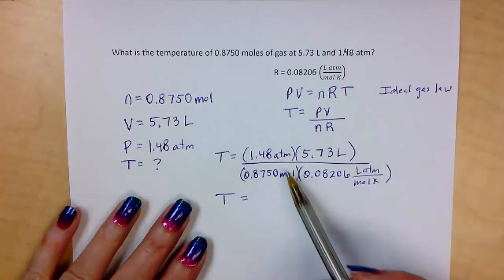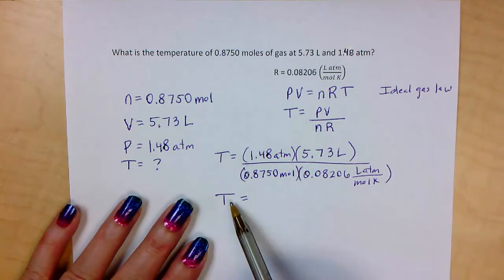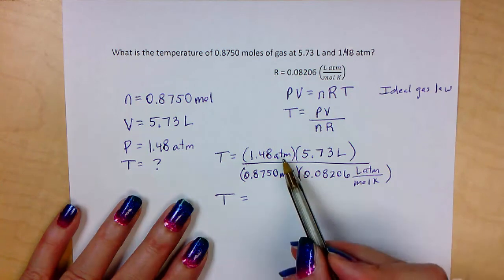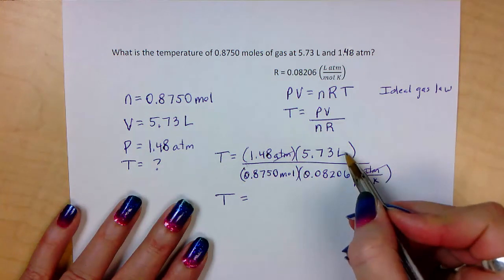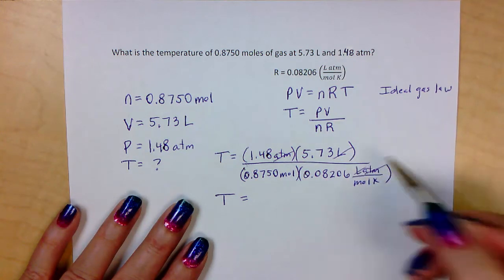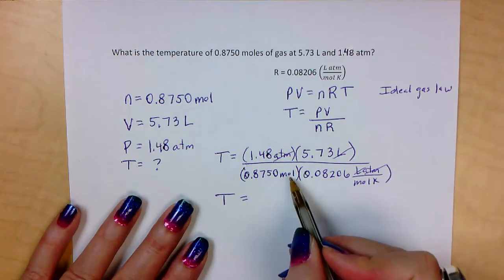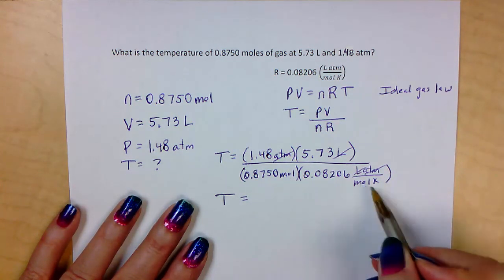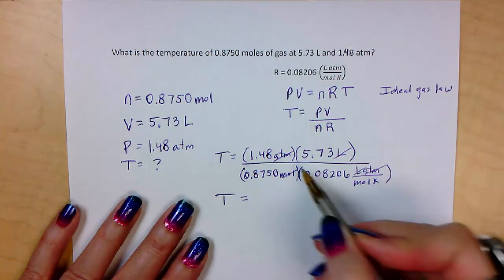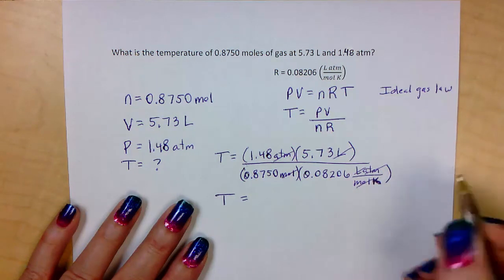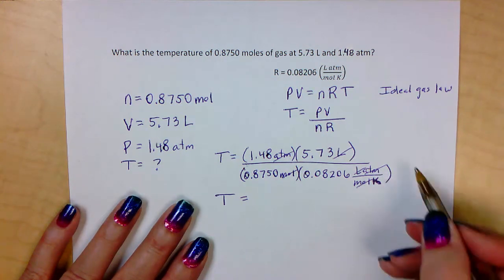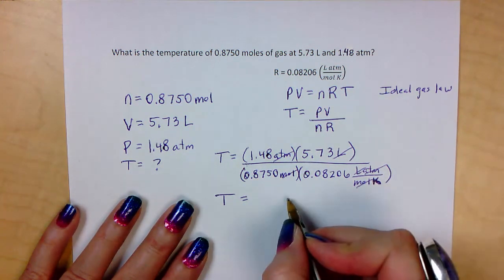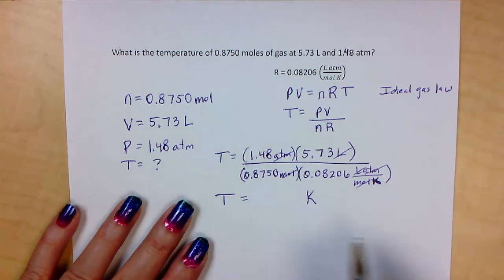So let's look at our units. If our unit that we end up with is a temperature unit, then we'll know that we did it right. So we have atmospheres on top and atmospheres on the bottom. That's going to cancel out. We have liters on top, liters on the bottom. That's going to cancel out. Then we have moles in the denominator. But moles is in the denominator of the denominator, so moles will cancel out. That leaves us with Kelvin here in the denominator of a denominator. And remember, that actually brings it back up to the numerator. So we're going to have Kelvin as our unit. Is that a temperature unit, Kelvin? Yes, it is.